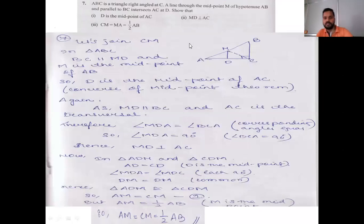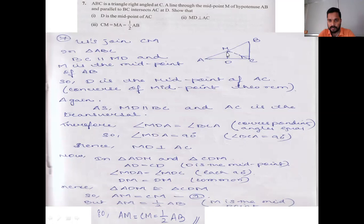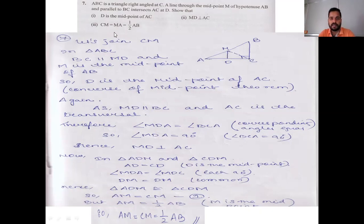Question 7: ABC is a triangle right-angled at C. A line through the midpoint M of hypotenuse AB, parallel to BC, intersects AC at D. First, show D is the midpoint of AC. In triangle ABC, MD is parallel to BC and M is the midpoint of AB, so by the converse of the midpoint theorem, D is the midpoint of AC.